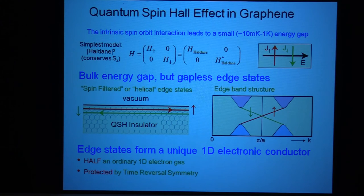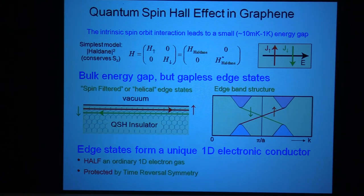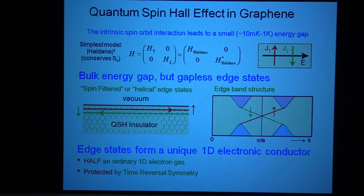These helical edge states are very special, though not quite as special as the quantum Hall chiral edge states. Remember with the chiral edge states, you had no choice but to go forward. With these edge states you can go backwards. But there's a sense in which they are protected — they are protected by time reversal symmetry. These edge states form half of an ordinary one-dimensional electron system. An ordinary one-dimensional electron system with spin has up and down spins going to the left and up and down spins going to the right; this one is only half of them.